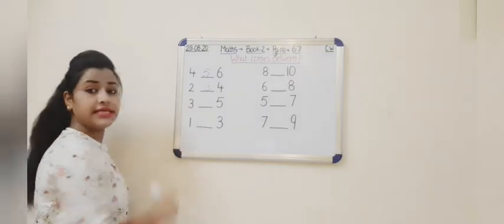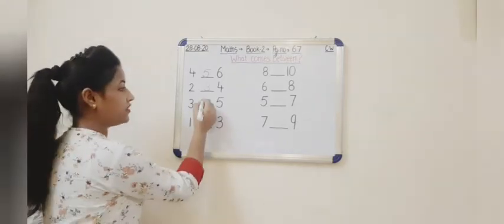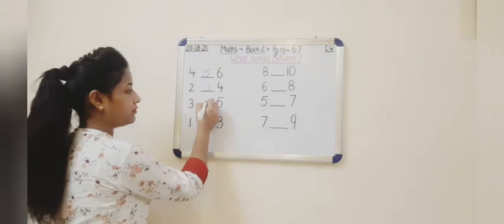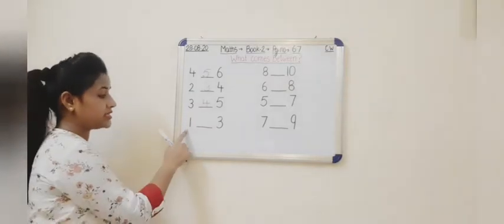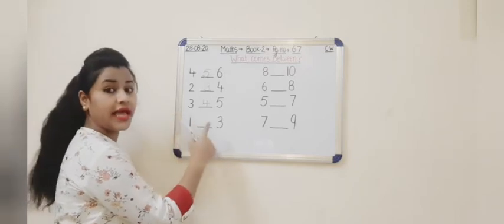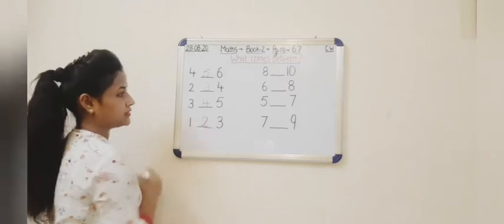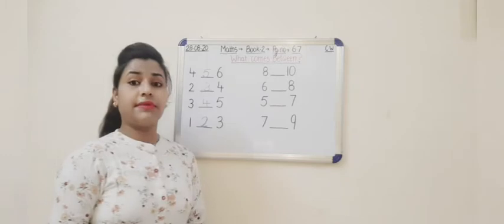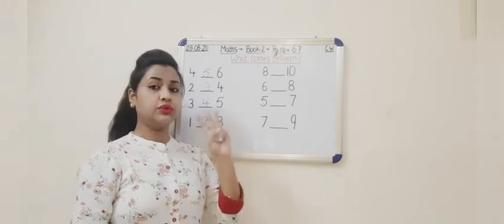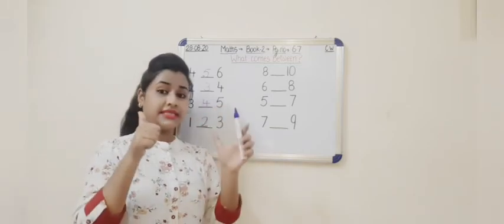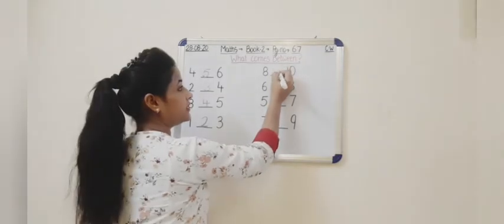Now come to the next. Which number is this? 3. So what comes after 3? Count: 1, 2, 3 and 4. So we will write here number 4. Count: 3, 4, 5. Now which number is this? This is the number 1. Count: 1 and 2. Now which number is this? This is number 8. So which number comes after 8? Count: 1, 2, 3, 4, 5, 6, 7, 8 and 9. So we will write here number 9.